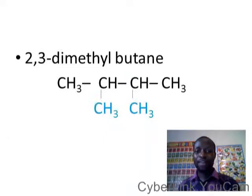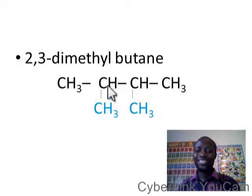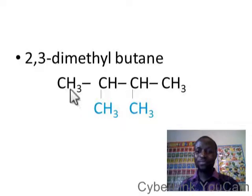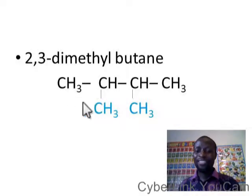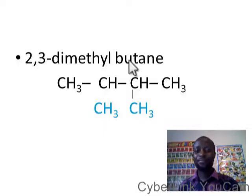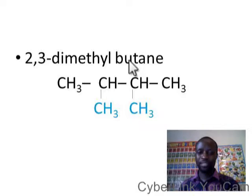The fifth isomer has methyl groups on carbons 2 and 3. Whether you start counting from either end, you get positions 2 and 3, making it 2,3-dimethylbutane. These are the five isomers of hexane.